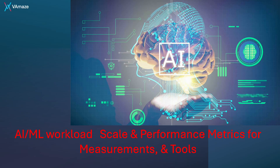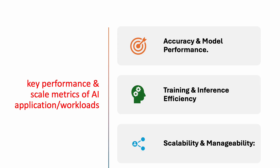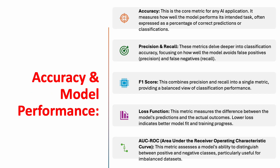Welcome to the session. Today we are going to go through the AI/ML workload scale and performance metrics for measurements and the tools we can use for those measurements. There are three categories of key performance and scale metrics for AI applications or workloads: accuracy and model performance, training and inference efficiency, and scalability and manageability. Let's go through each of them in detail in the next few slides.